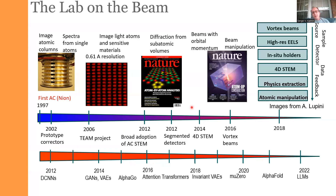By 2012 aberration-corrected machines had become rather universal, and then the subsequent decade from 2012 to the present day saw almost every year the evolution of a new type of electron microscopy — including segmented detectors that allowed mapping of internal electric fields inside materials, 4D-STEM that allowed mapping of fine details of atomic structure at exceptionally high resolution, and vortex beams which essentially allowed detection of the orbital state of matter, and so on.